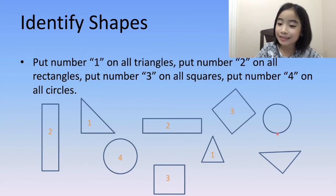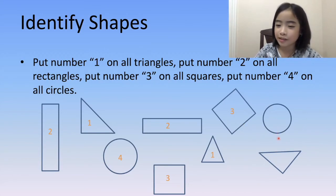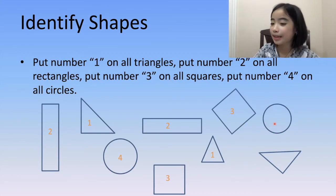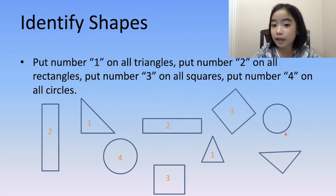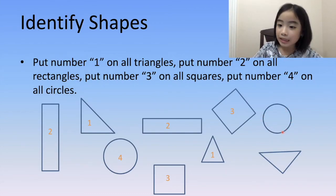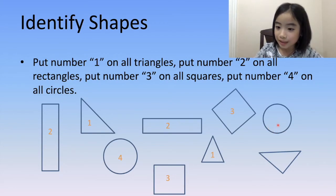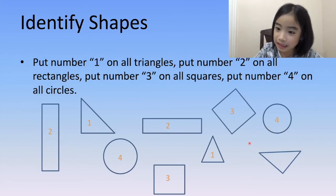Now, let's look at this shape over here. It doesn't seem like it has any corners or sides, so it is a circle. Let's put the number four on this circle.